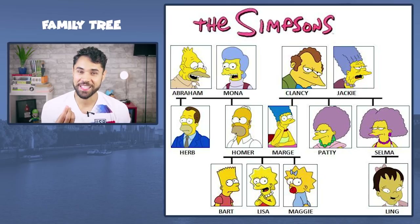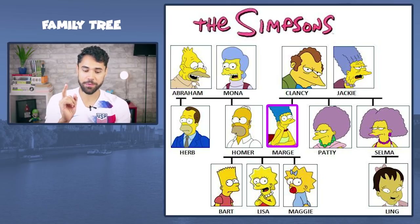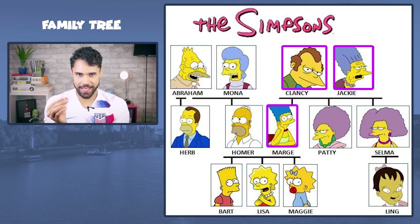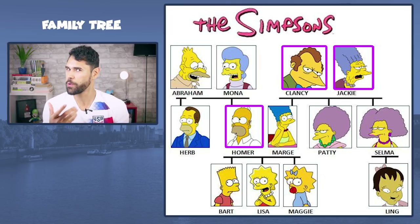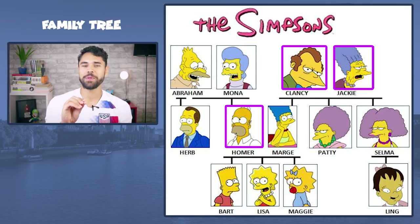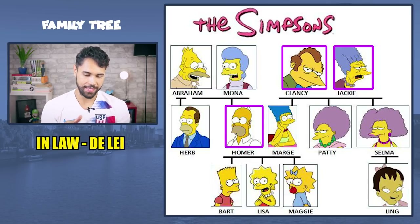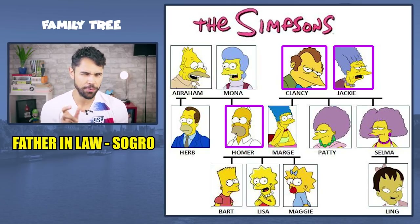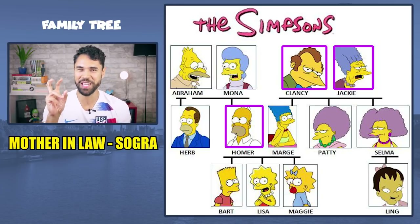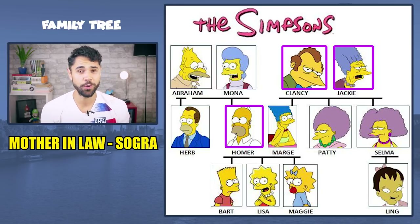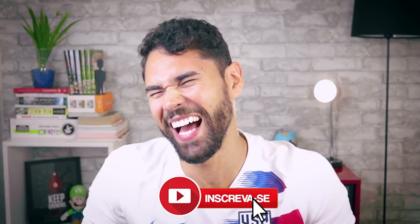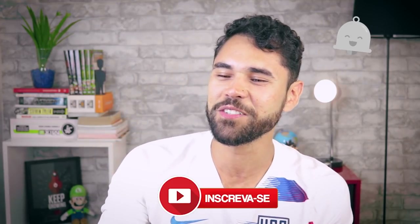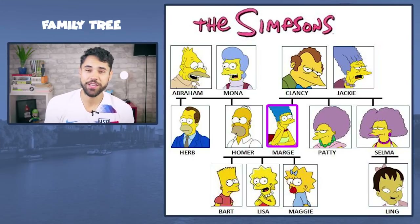Tá anotando? Vamos continuar. Let's move on. Já do lado da Marge, da esposa do Homer, nós temos ali os pais dela, que é o Clancy e a Jackie. O Clancy ele é o pai de lei do Homer. Porque quando você casa com a sua esposa, o pai dela acaba virando, de certa forma, o seu pai. Isso me ajudou a memorizar a expressão in-law. Porque o pai dela, o Clancy, ele acaba virando o father-in-law — é tipo o pai de lei. E a mãe vira mother-in-law. Father-in-law é o sogro, e mother-in-law é a sogra. Uma pessoa tava dando aula, aí o aluno perguntou: professor, como é que se diz sogra em inglês? Aí o colega falou: snake. Snake é cobra, né?